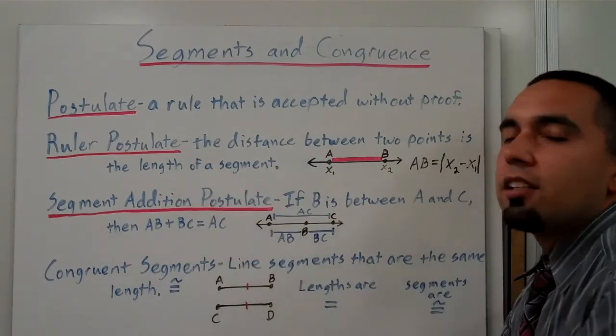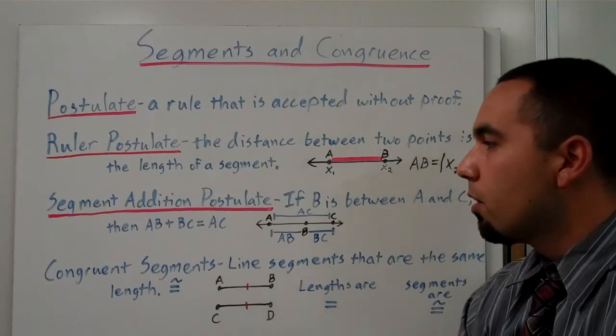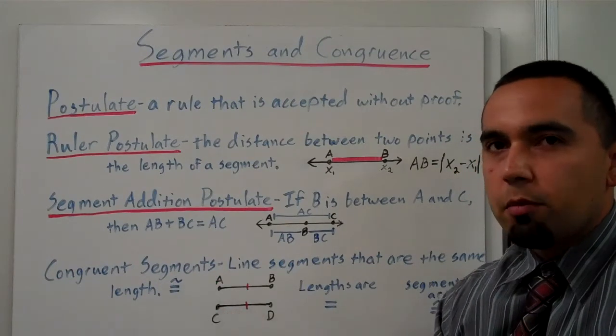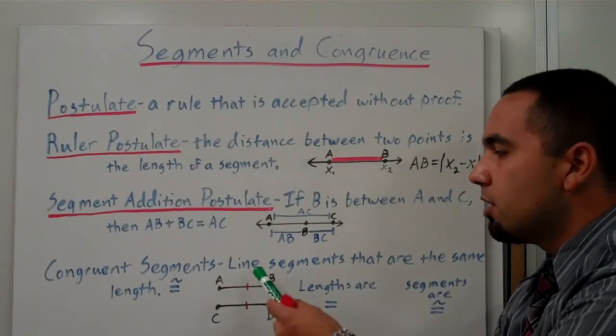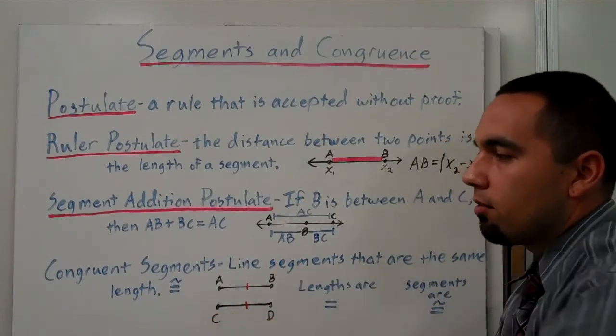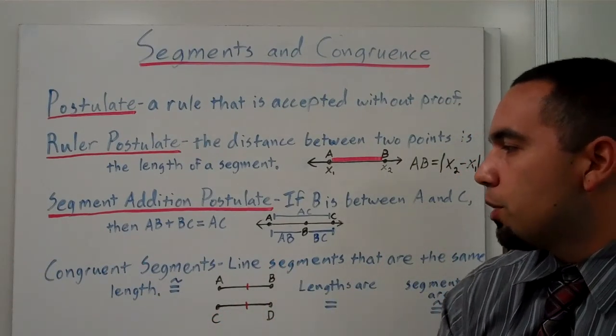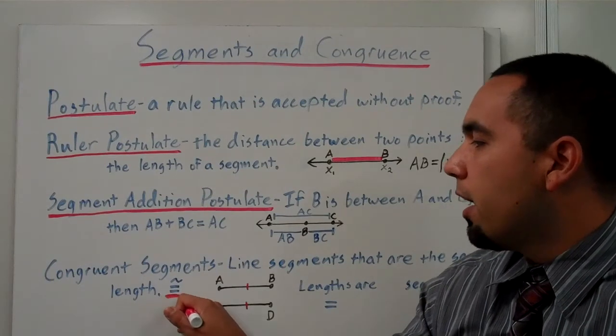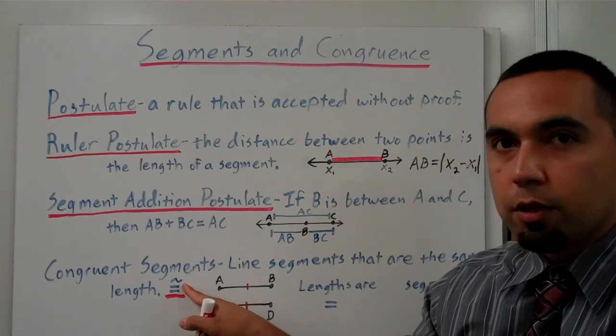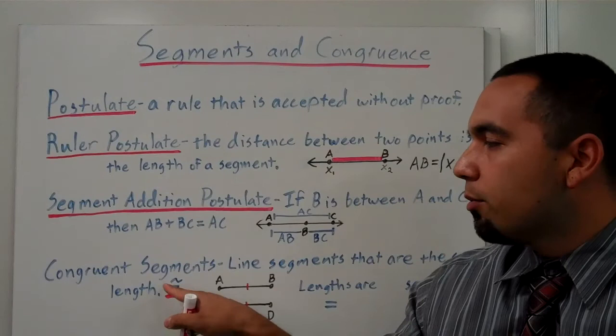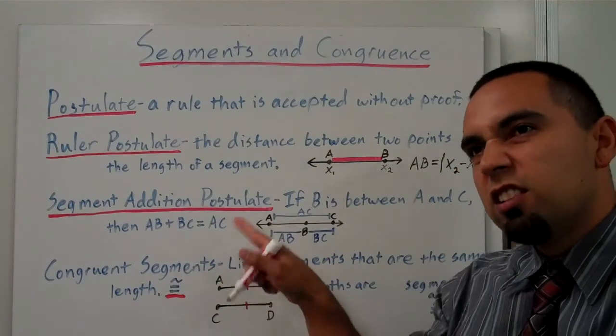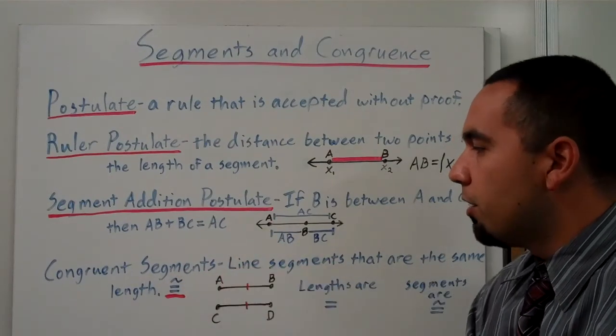We also have congruent segments, and this is simply line segments that are the same length. And the way we do it is we use this symbol here, and that symbol means congruent. It's just an equal sign with this little thing above it.